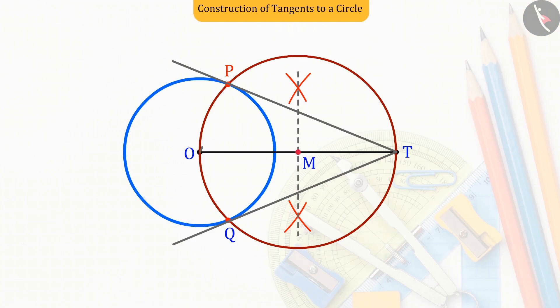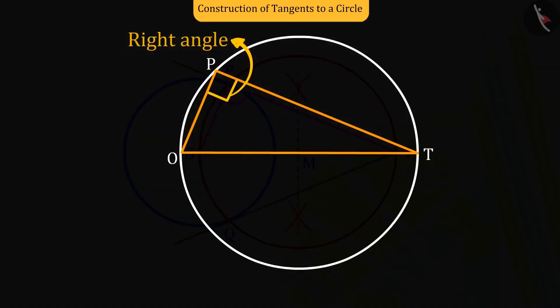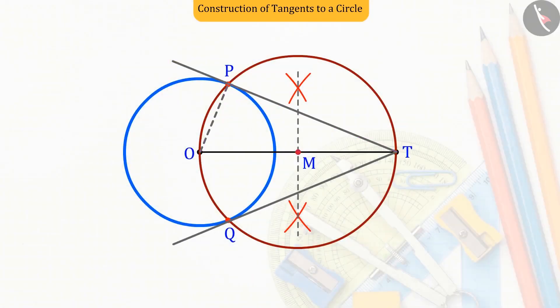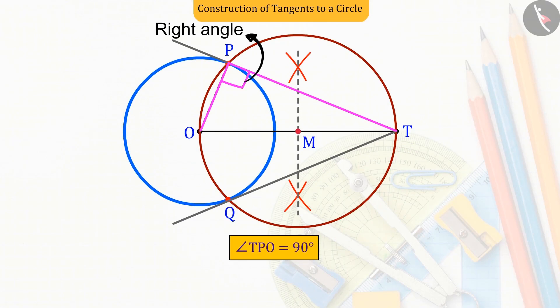Matching point O with point P, which gives us the line segment OP, which is the radius of the circle. So now, you can see that the angle TPO is an angle formed in a semicircle. And we know that the angle formed in a semicircle is a right angle. Hence, the angle TPO will be a right angle.